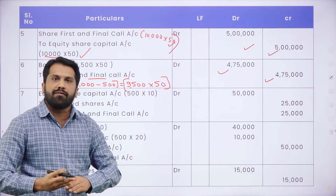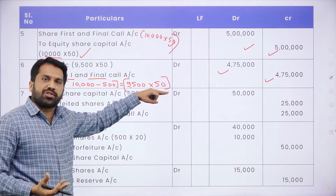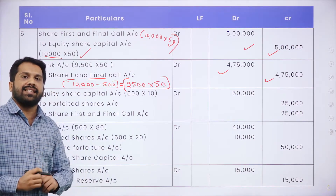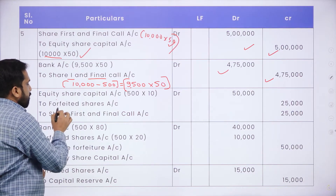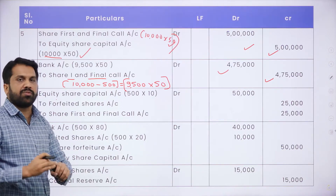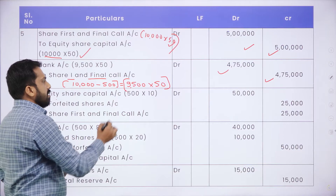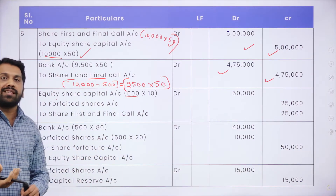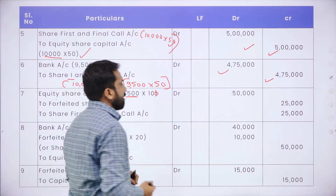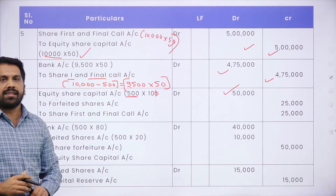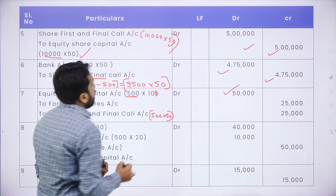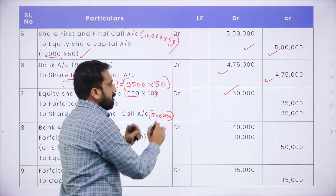This is all about the issue of shares. Now, cancellation — 500 shares are not paid properly, so we are cancelling those shares. Journal entry: Equity Share Capital Dr. to Share First and Final Call and Forfeited Shares Account. Number of shares being cancelled: 500. Actual value of share: ₹100. So 500 × ₹100 = ₹50,000 for share capital debit. Final call not paid: 500 × ₹50 = ₹25,000.